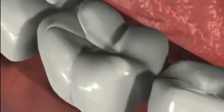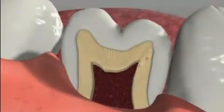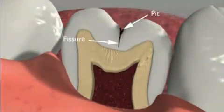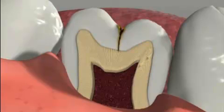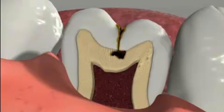Deep pits and fissures are the source of some 80% of tooth cavities. This is mainly because food and bacterial plaque lodge in these tight crevices and are often inaccessible to toothbrush bristles. Plaque acids and enzymes at the base of these grooves cause the tooth enamel to dissolve, eventually leading to cavities.